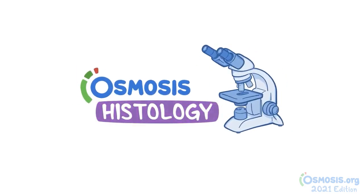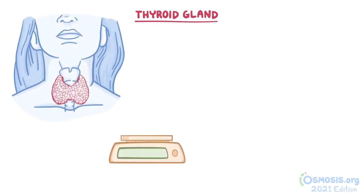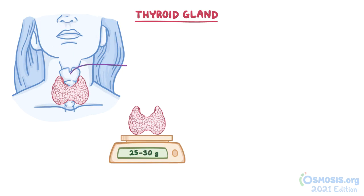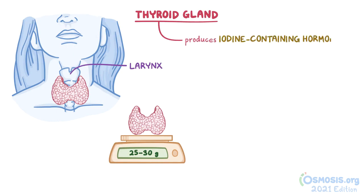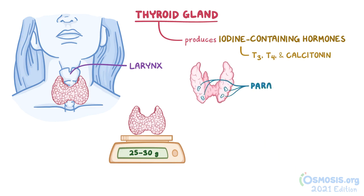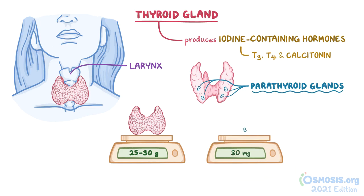Let's get a closer look. The thyroid gland is a butterfly-shaped endocrine gland with an average weight of 25 to 30 grams, located anterior and inferior to the larynx. It produces two types of hormones: the iodine-containing hormones triiodothyronine (T3), thyroxine (T4), and calcitonin. The parathyroid glands consist of four small ovoid glands that weigh 30 mg each and are located on the posterior surface of the thyroid gland. They're responsible for secreting parathyroid hormone, or PTH.